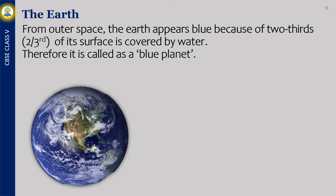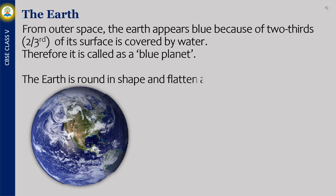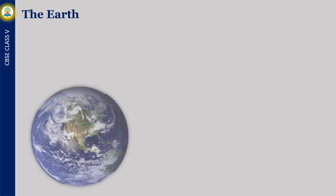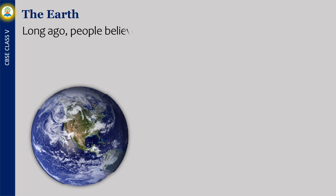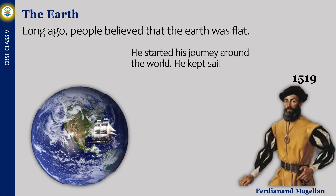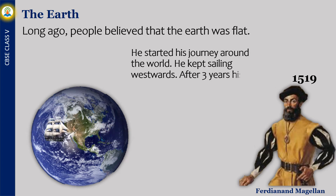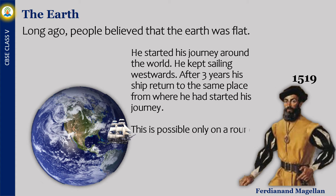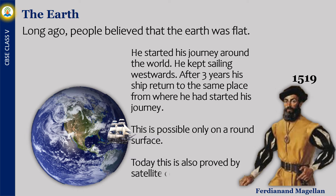The Earth is round in shape and flattened at the top and bottom. Long ago, people believed that the Earth was flat. In 1519, Ferdinand Magellan started his journey around the world. He kept sailing westwards, and after three years his ship returned to the same place from where he had started. This is possible only on a round surface. Today this is also proved by satellites, confirming Earth is round.